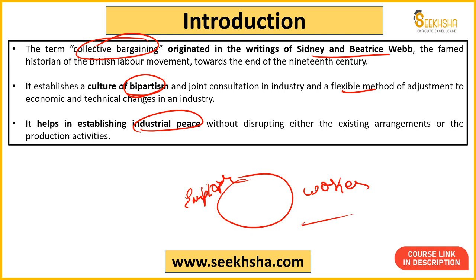Collective bargaining will not bring complete disruption. For example, going on strike is disruption. Going the Marxist route — a bloody revolution where workers say we'll take our rights through violence — that is disruption. An employer saying I'll lock up and leave, and the workers will suffer — that is disruption. But collective bargaining is not about disruption. It says no, let's work in a peaceful way.